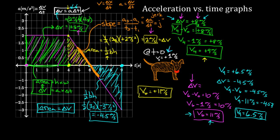Recapping: the most important fact is that the area under an acceleration versus time graph gives you the change in velocity. Once you know the velocity at one point, you can find the velocity at any other point. And the slope of an acceleration versus time graph gives you the jerk.